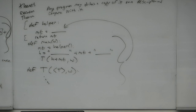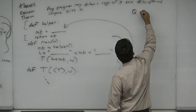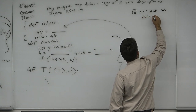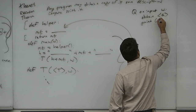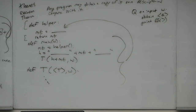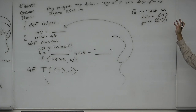Let's prove that quines exist using the recursion theorem. Q on input W: obtain the code of Q via the recursion theorem, then print Q. That is a quine. The way I'm writing this shows the high-level pseudocode syntax for how we'll use the recursion theorem — we say 'obtain a copy of my own description via the recursion theorem' and then continue. So we've proven the recursion theorem.